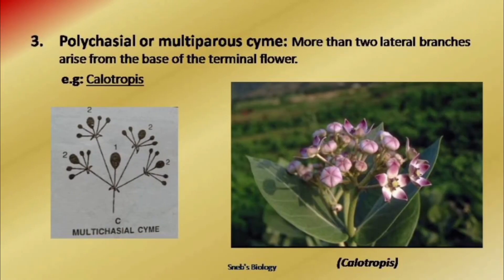If every time many branches are produced, it is known as the third type: multiparous cyme or polychasial cyme, seen in Calotropis. In Calotropis, every time multiple branches are produced. Look at the diagram — the main branch terminates into a flower, produces many branches, all terminating into flowers. When they branch again, everyone produces multiple branches, all terminating into flowers. This is multiparous or polychasial cyme.